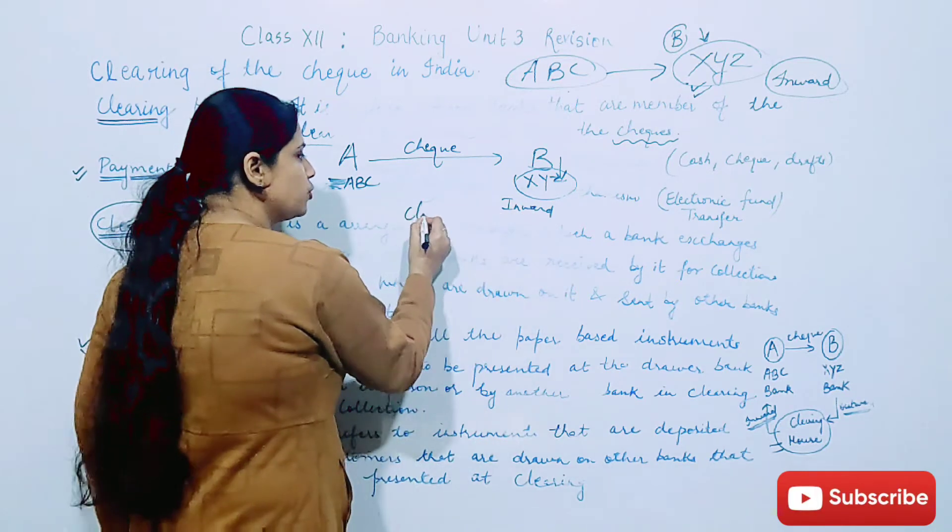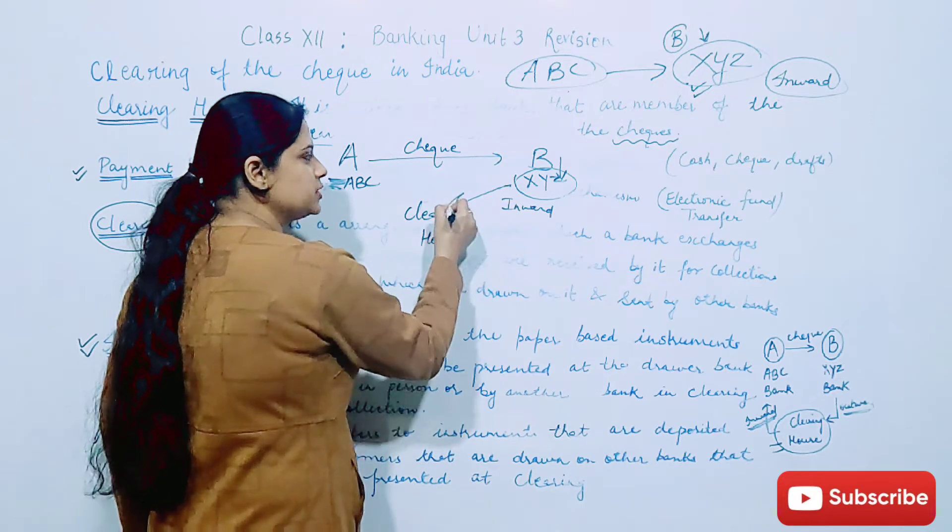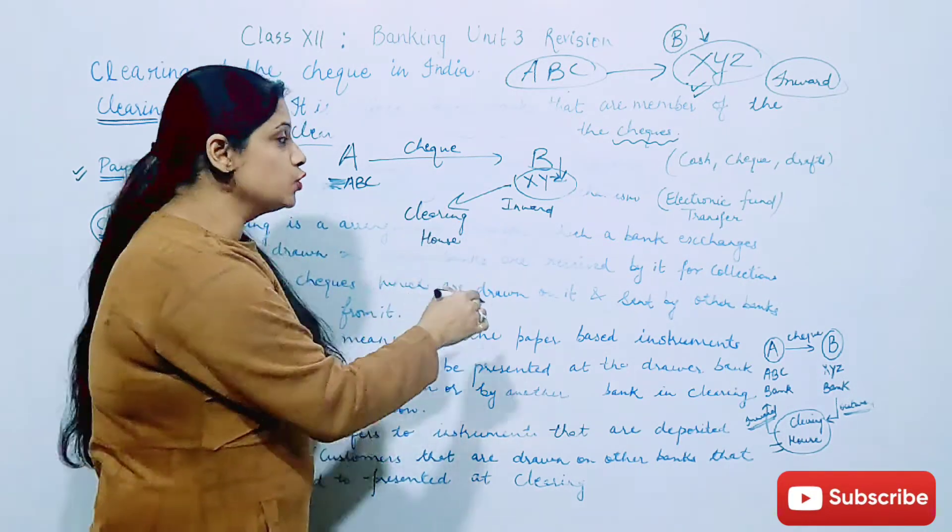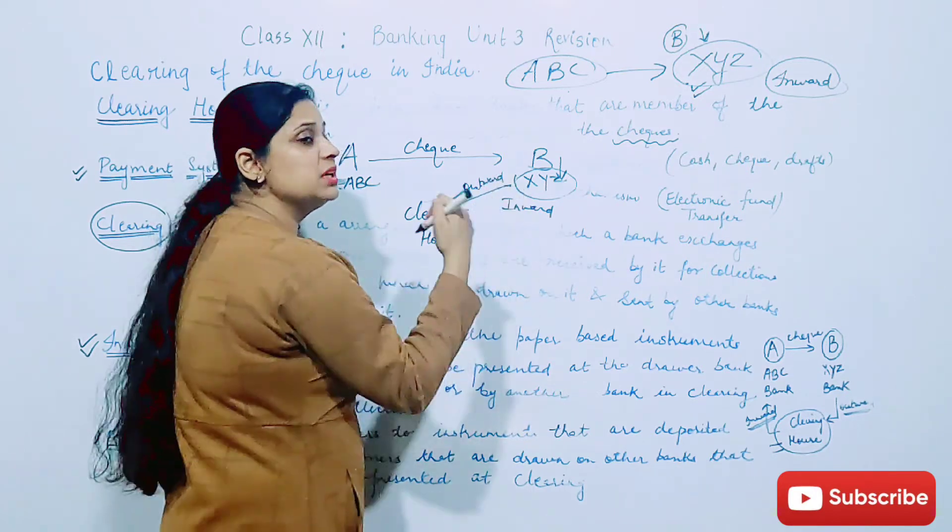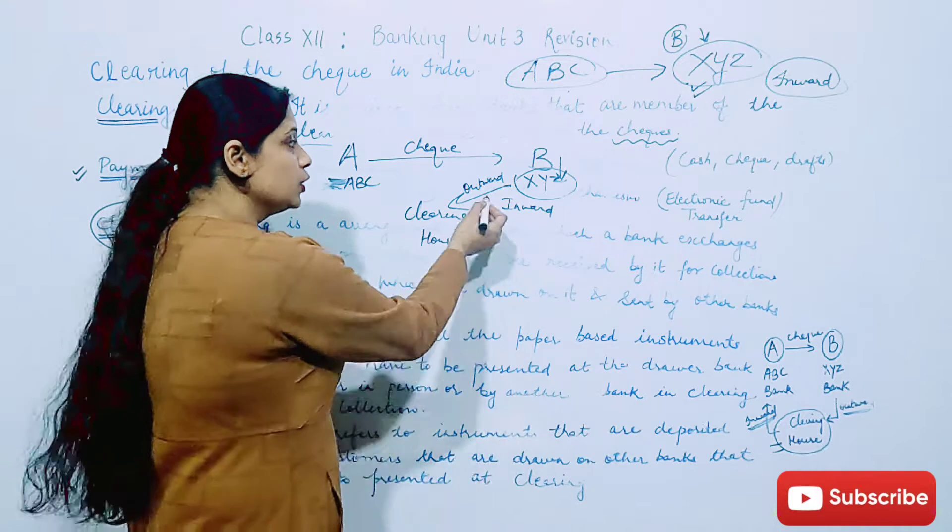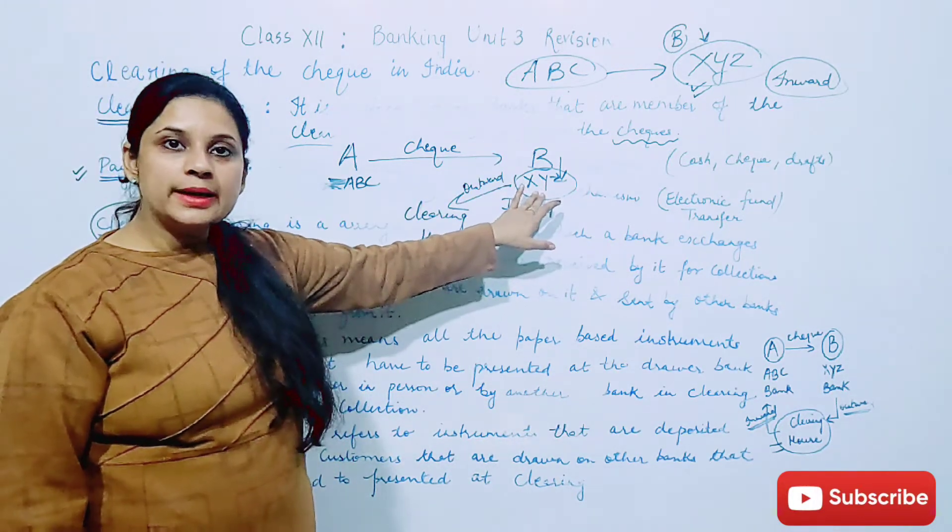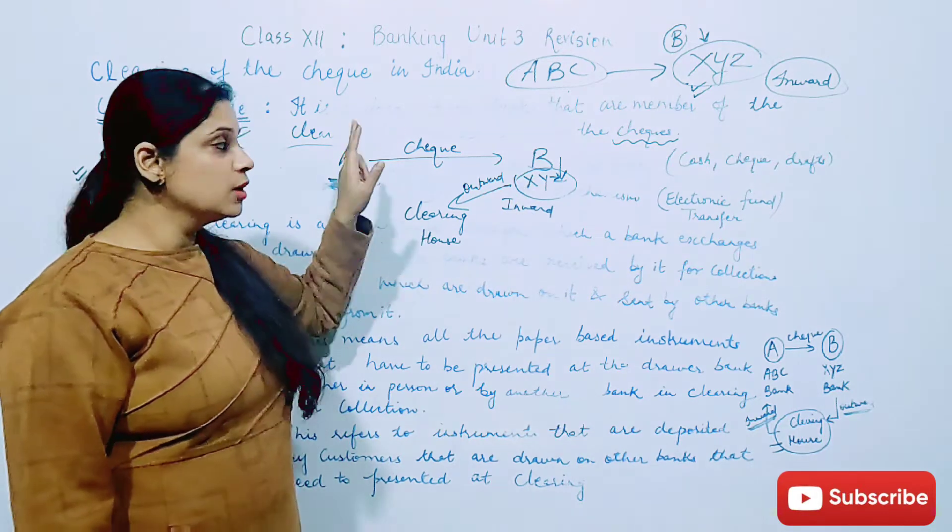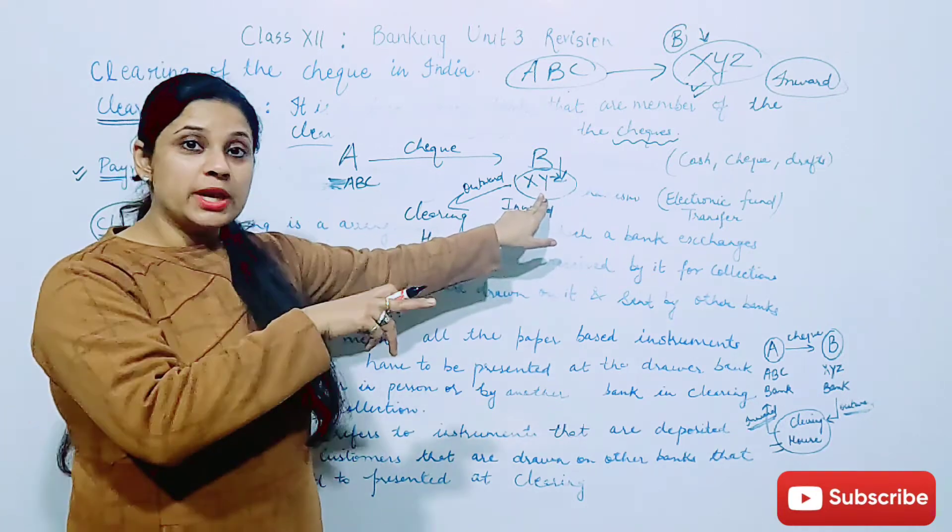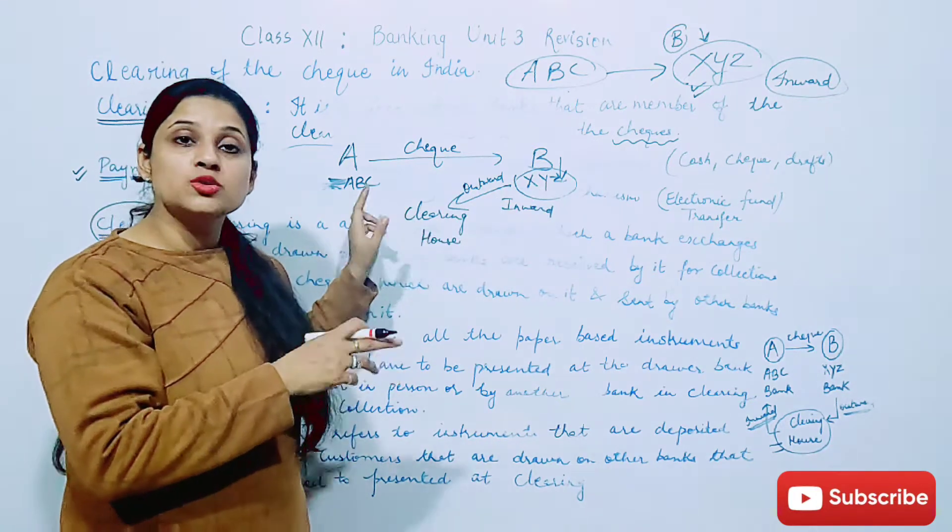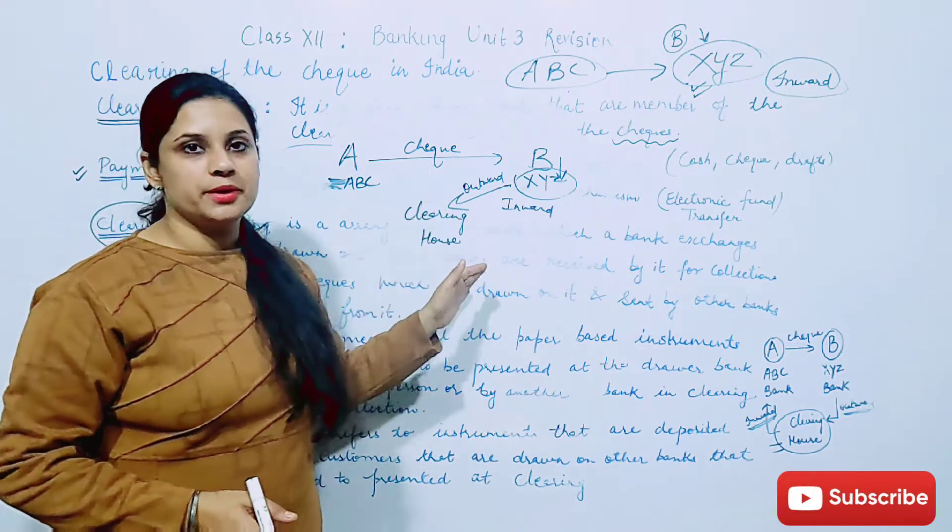So now who is taking the support? This is clearing house. He will take the support and in clearing house he will put the check. Now when clearing house gets payment from ABC, that is inward clearing. And when XYZ bank sends the check to the clearing house, that is called outward clearing.